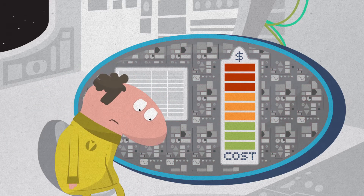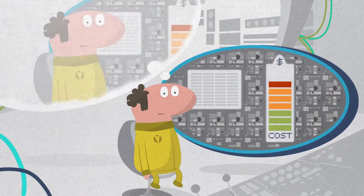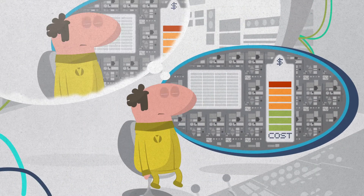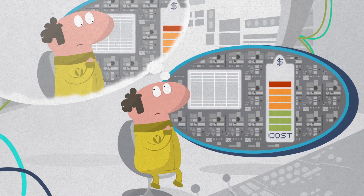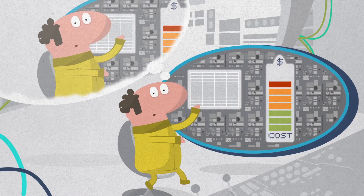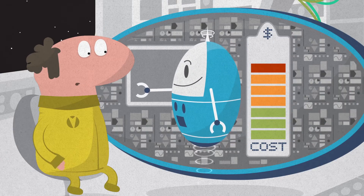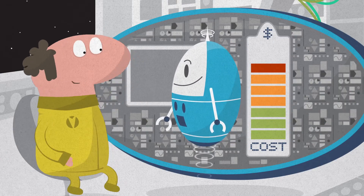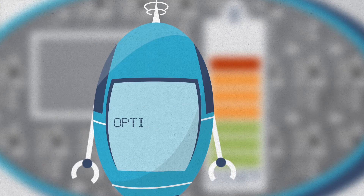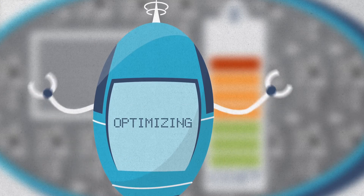MLC charges are so complicated, you need a mainframe to figure them out. And that makes no sense. This is why we've created BMC Cost Analyzer for Z Enterprise — it helps you optimize your MLC spending.